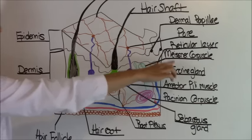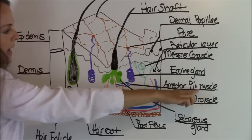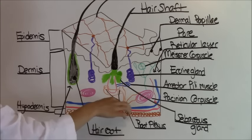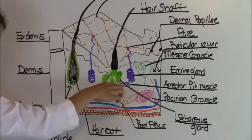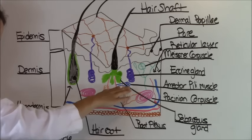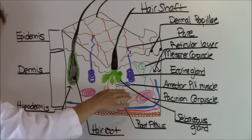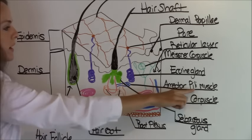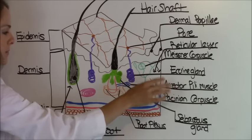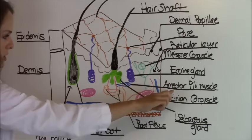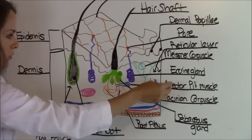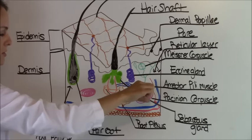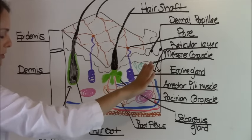Next we have the erector pili muscle. This little muscle is located where your hair shaft is around that root hair plexus. What it does is it is a bundle of smooth muscle cells that produces goosebumps on the skin. So the key to remember with this erector pili muscle is it produces goosebumps. That's probably going to be a test question. Think how you remember that is erector - it erects your skin, your hair. So whenever you get goosebumps, your skin erects and the hairs on your arms stand up.